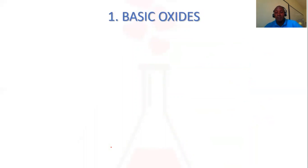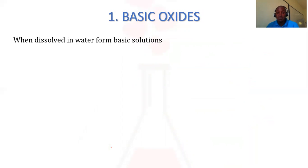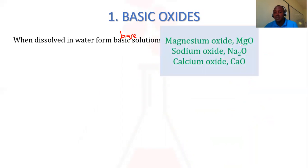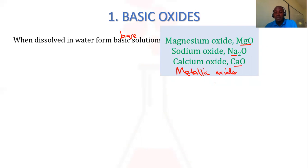So try and stick around. We have basic oxides — these are oxides which when dissolved in water will always form basic solutions, that is to say they will form bases. That's why we call them basic, because they will tend to form bases. Some common examples of basic oxides: we have magnesium oxide, sodium oxide, calcium oxide. You will note that usually most basic oxides will be metallic oxides — oxides of metals — with some exceptions.